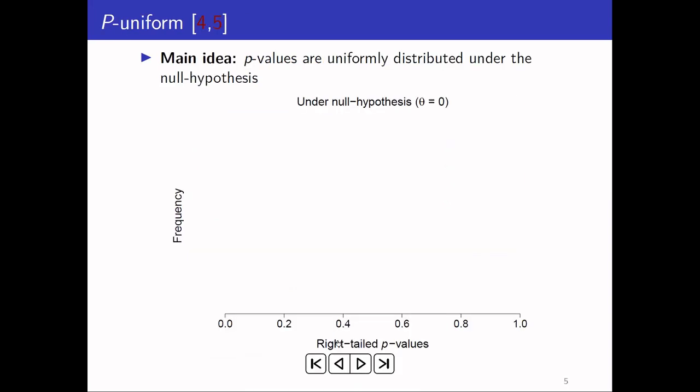Now I'm going to explain how the p-uniform method works. I'll do this using a simulation example where I generate data from studies repeatedly and each time compute a right-tailed p-value. The true effect size is equal to zero, which means I'm generating data and computing p-values under the null hypothesis.